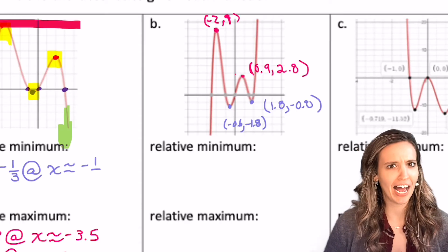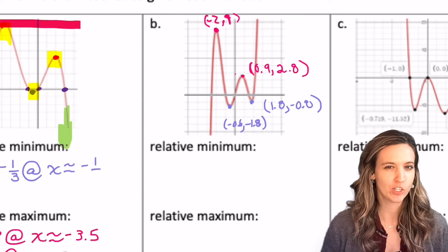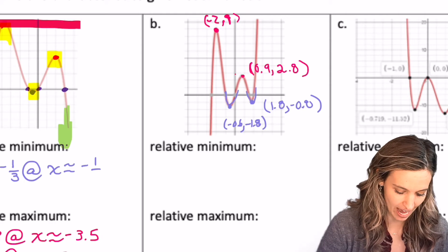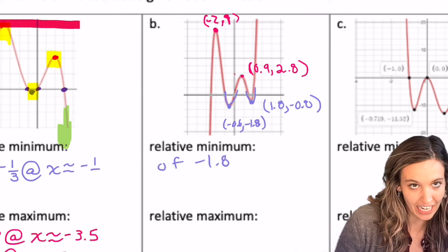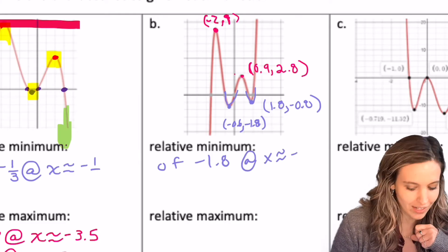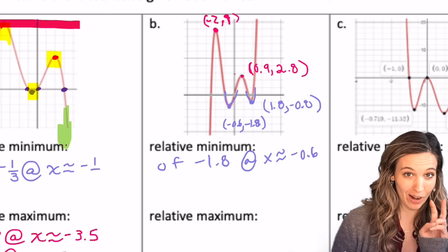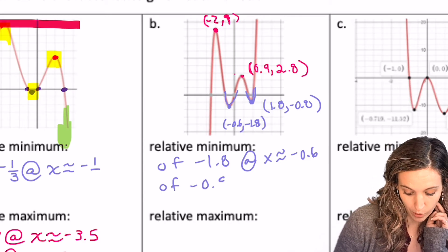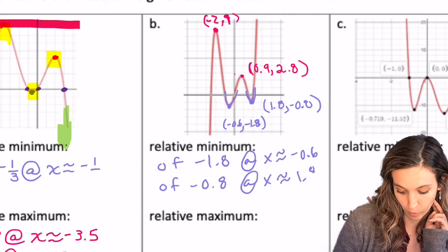Looking at this next graph, I've labeled my points first because I really had to look close and approximate. So which ones are relative mins? Well, this guy and this guy. So I have one relative min of negative 1.8 about at x approximately equal to negative 0.6. Then I have a second relative min right here of negative 0.8 at x approximately equal to 1.8.